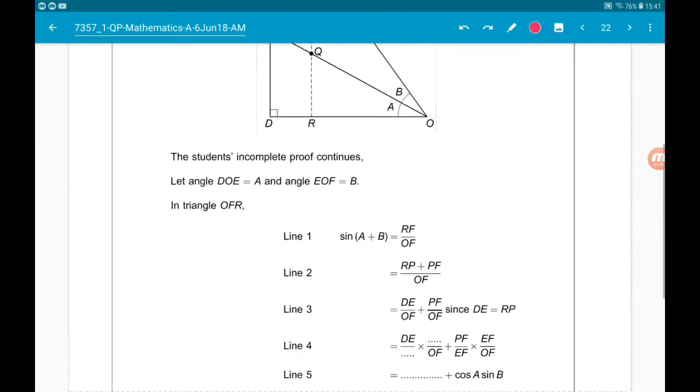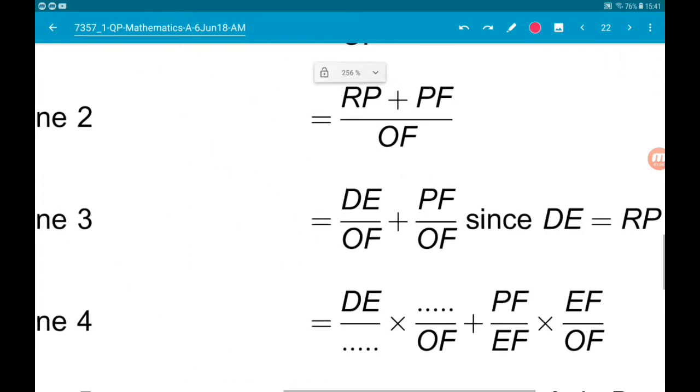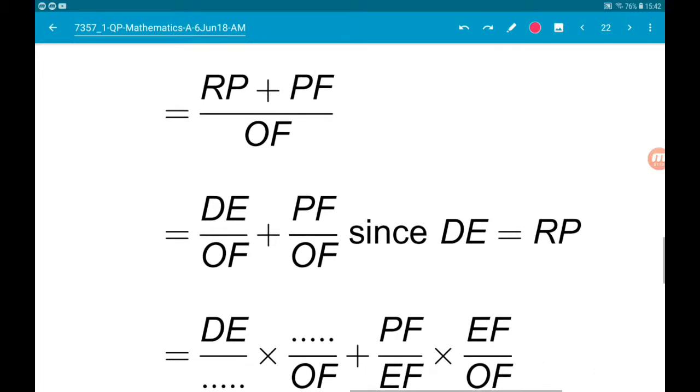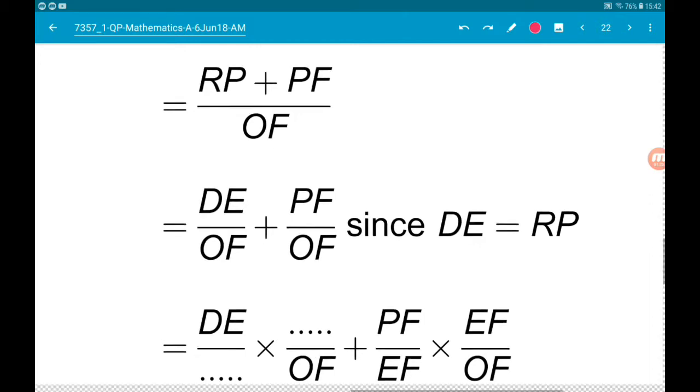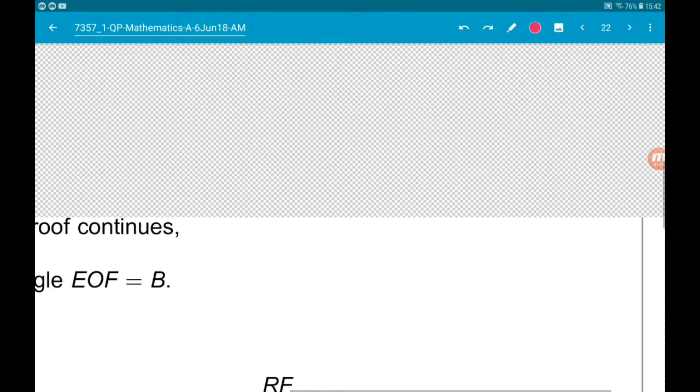Okay, then in line 3. We've now got DE over OF and PF over OF, since DE is equal to RP. So let's have a look.